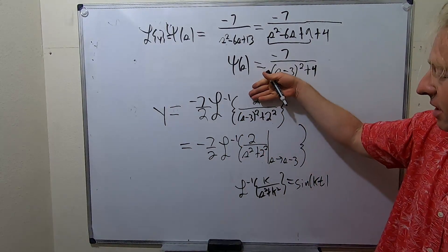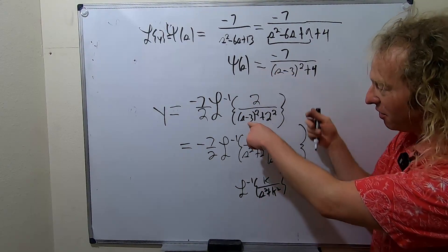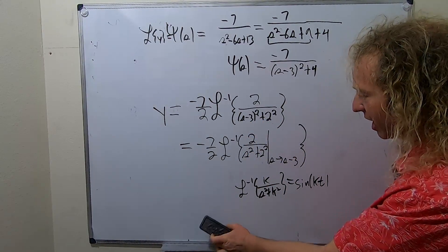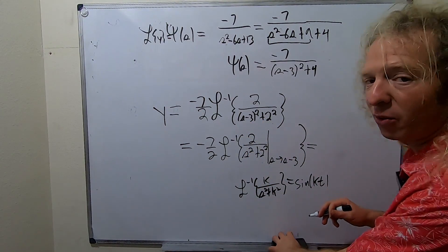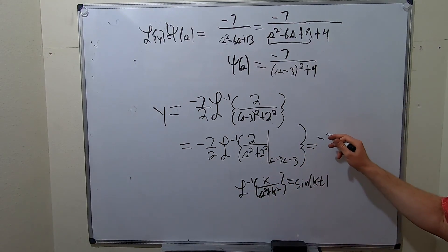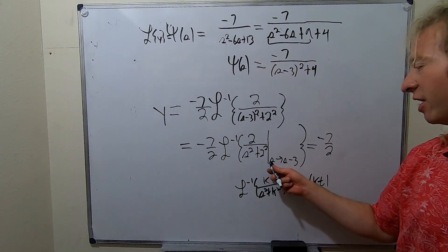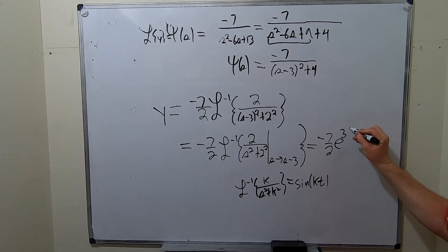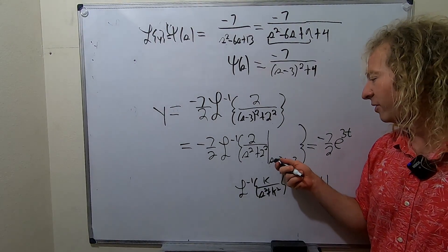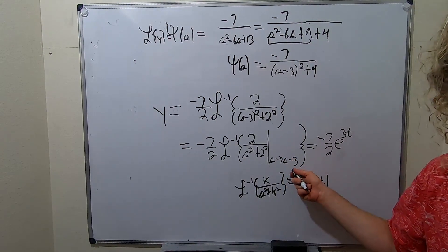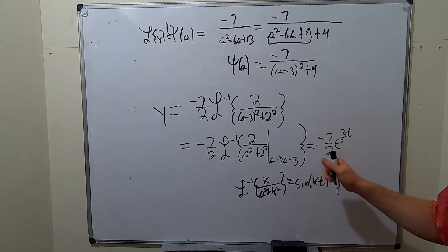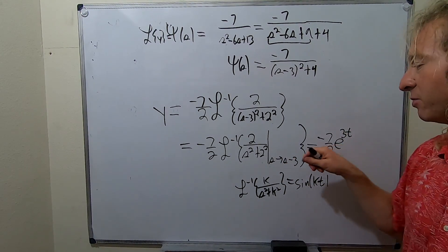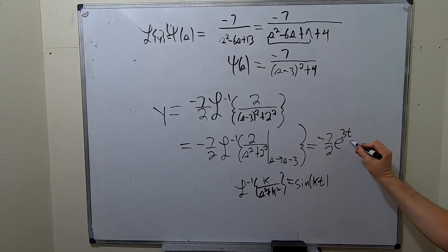The 2 needs to be there because it needs to match the formula. But then this S minus 3 needs to be an S. So we draw a line and we shift it. When we do that, we get an exponential function. So this is negative 7 halves. The shift is going to give us an E to the 3t. That's the first translation theorem. So whenever you go from S to S minus A, it gives you an E to the A t. Remember, shifts become exponentials and exponentials become shifts. And this is a sine 2t.